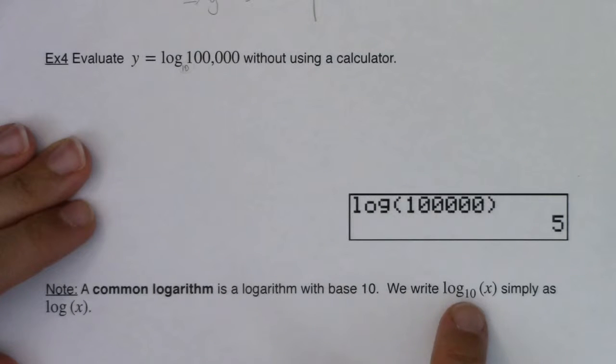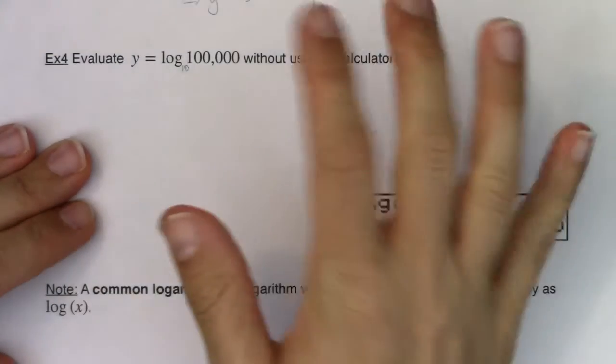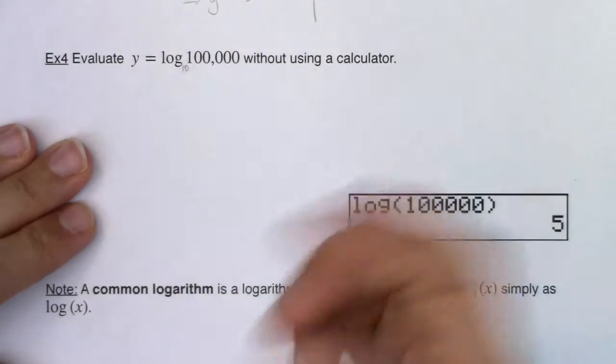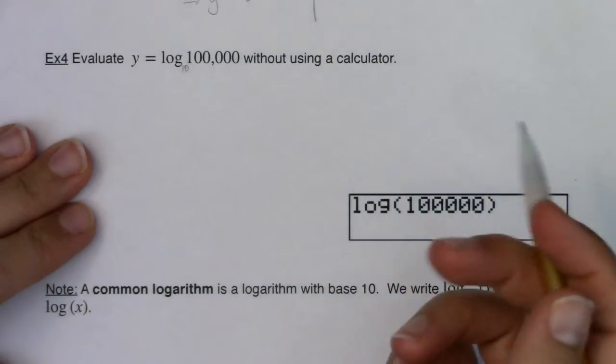We write log base 10 simply as log x and this was called the common logarithm because people used to count with their fingers and you had 10 fingers. So that's why this is called the common logarithm.